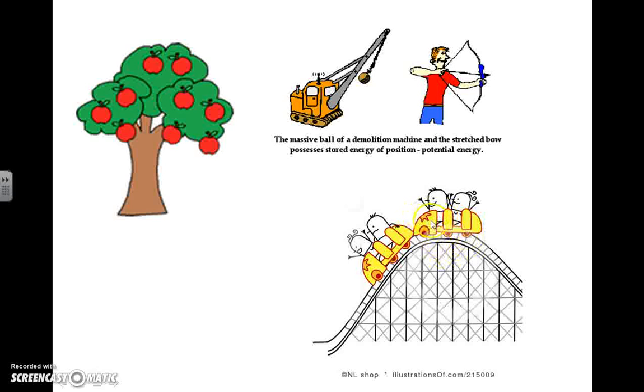But as this cart goes down this hill, the cars and the people in them would begin to convert their potential energy, due to gravity and height above the ground, into kinetic energy as they go down that hill.